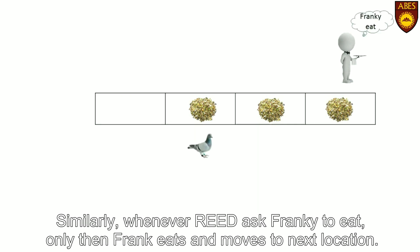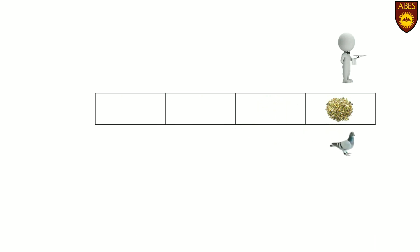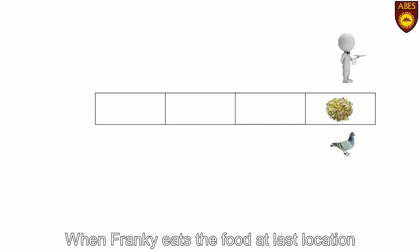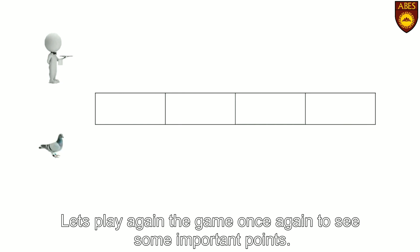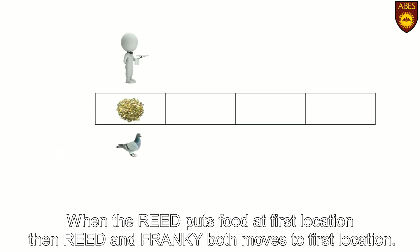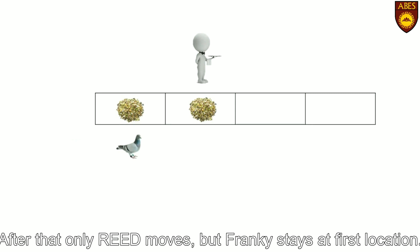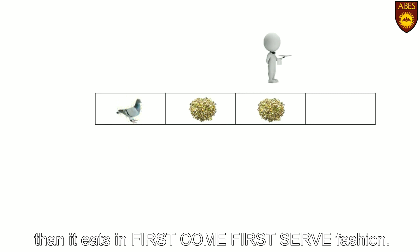Reed noticed that Frankie didn't eat until he is asked to eat. When Reed asks Frankie to eat by saying 'Frankie eat,' then Frankie eats the food at its current location and moves to the next location. Similarly, when Reed asks Frankie to eat, only then Frankie eats and moves to the next location. This proves that Frankie is a very obedient pigeon. When Frankie eats the food at the last location, both Reed and Frankie move to the initial position. Let's play the game once again. When Reed puts food at the first location, both Reed and Frankie move to the first location. From the next location, only Reed moves but Frankie stays at the first location. Whenever Reed asks Frankie to eat, it eats in a first come first serve fashion — Frankie doesn't skip food at any location.